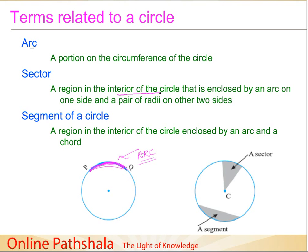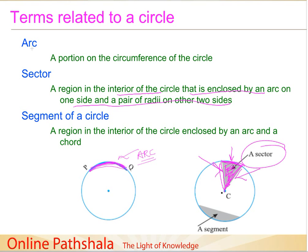What is a sector? A sector is a region in the interior of a circle that is enclosed by an arc on one side and a pair of radii on the other two sides. Here is an example of a sector: there is this arc, and then we have one radius and another radius. The portion enclosed between the arc and the two radii is called a sector of the circle.